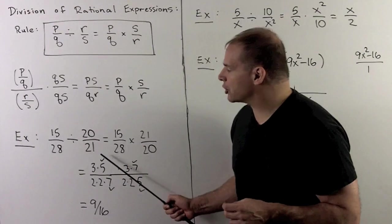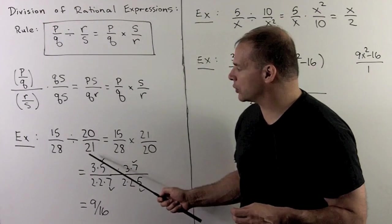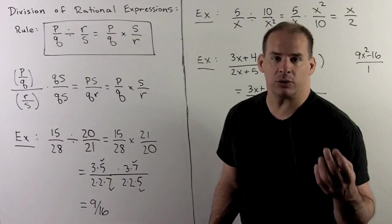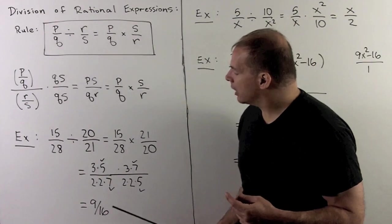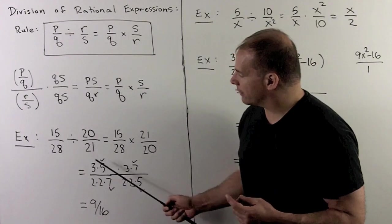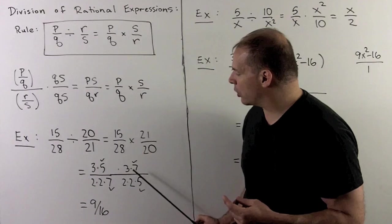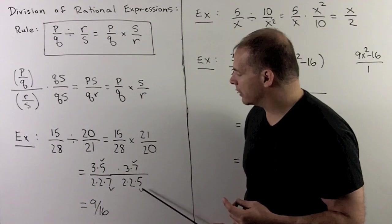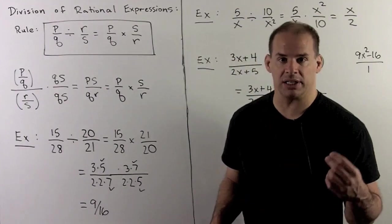Now, checking with rational numbers, let's try 15 over 28 divided by 20 over 21. Take the reciprocal, so we're multiplying by 21 over 20. Factor completely, so 3 times 5 over 2 times 2 times 7, 3 times 7 over 2 times 2 times 5. 7s cancel, the 5s cancel, leaving me with 9 over 16.